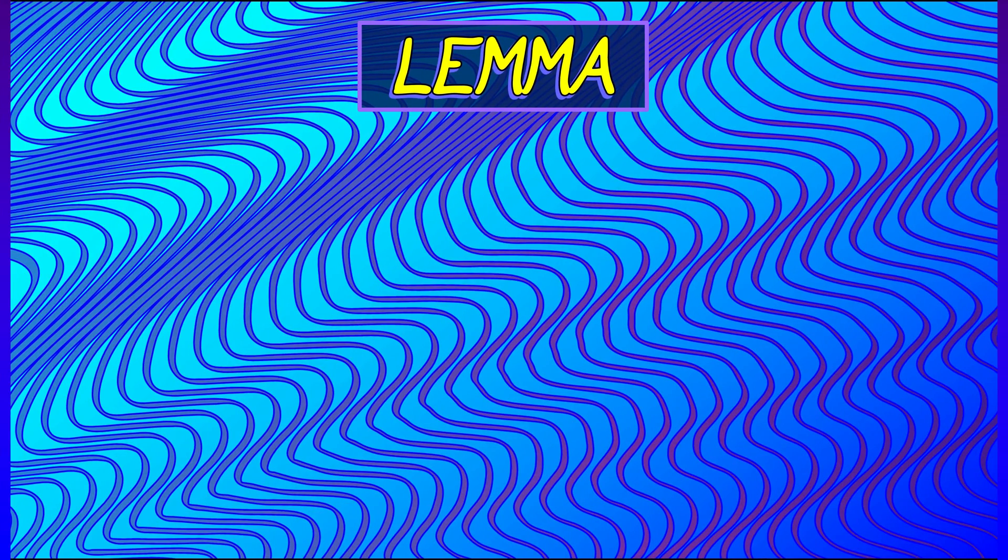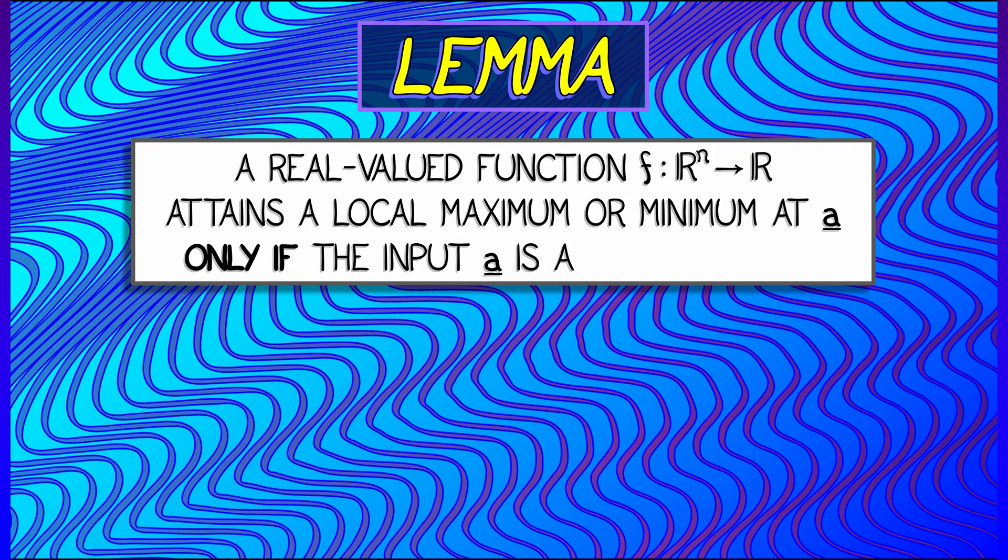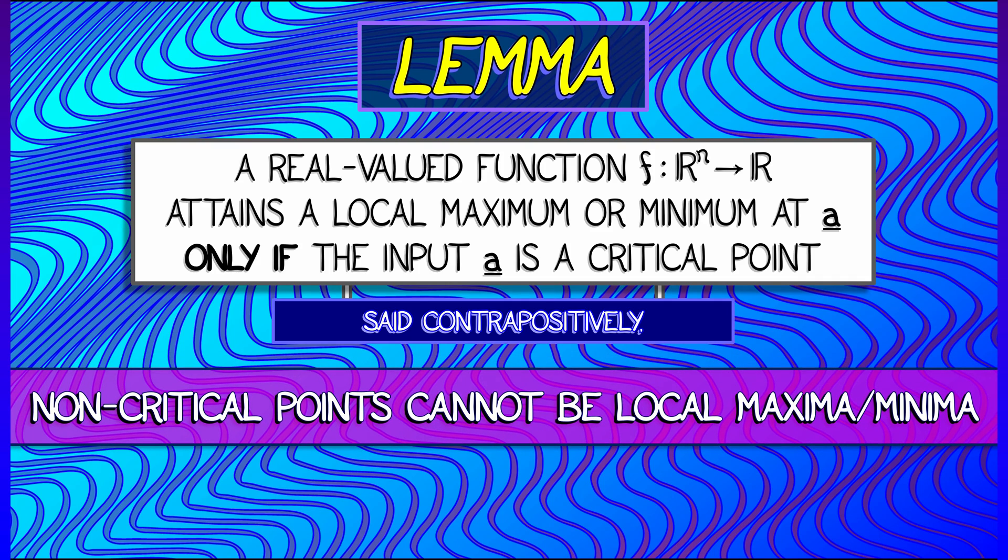Now, the lemma that gets us started is that for such a function, you attain a local maximum or a local minimum only if that location is a critical point. Or if we run the machine backwards, non-critical points cannot be local maxima or minima.